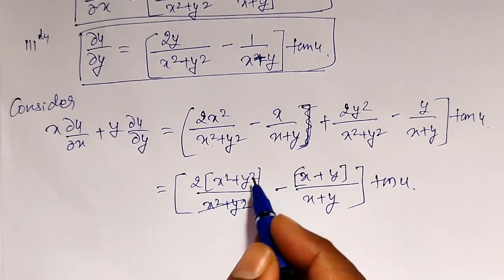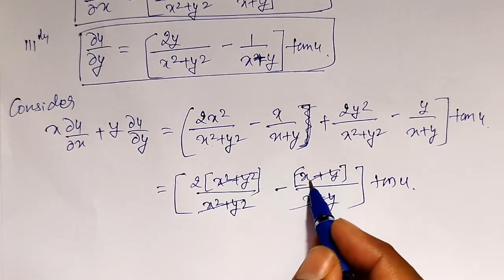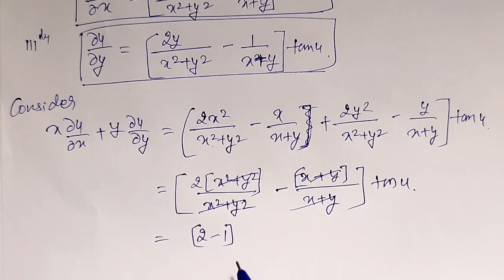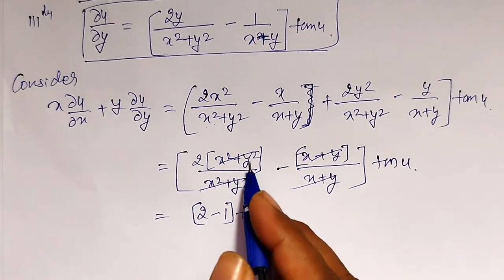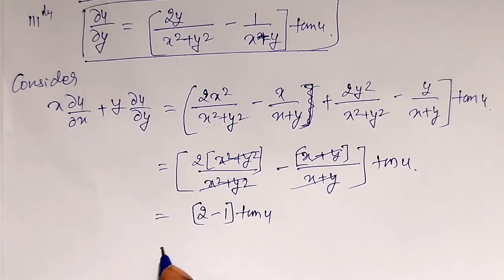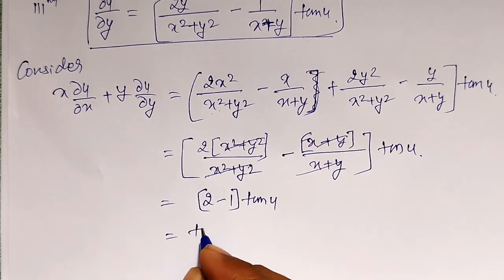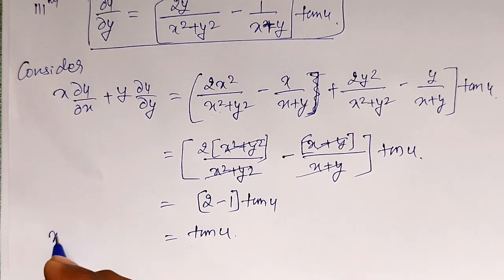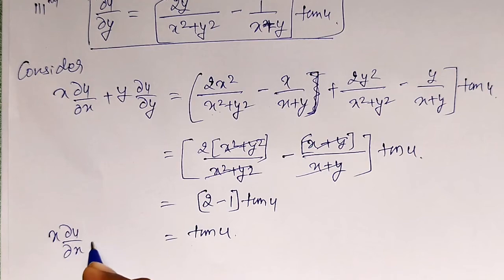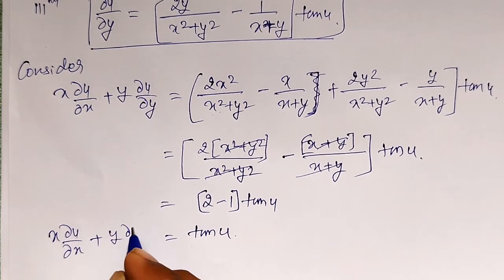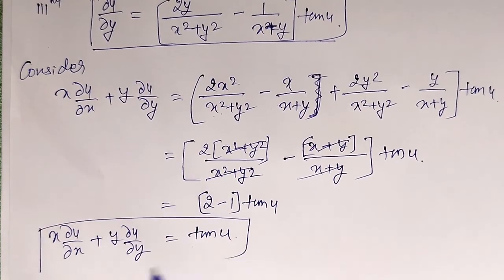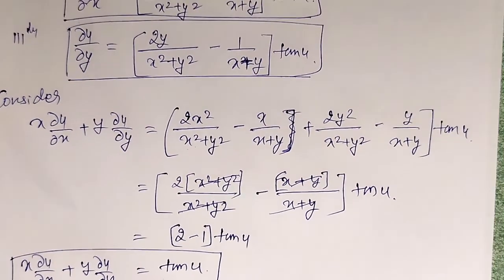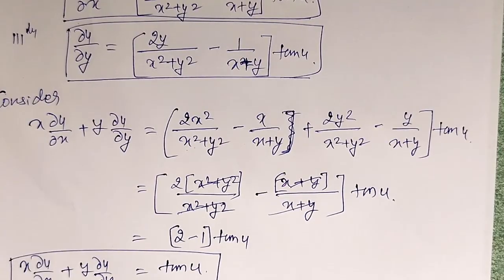The x² + y² cancels giving 2, and the x + y cancels giving 1. So we get (2 − 1) · tan(u) = tan(u). Therefore x·∂u/∂x + y·∂u/∂y = tan(u), which is what we had to prove.